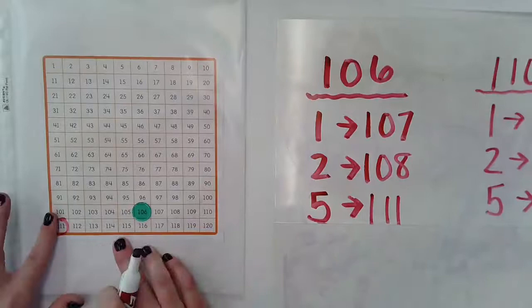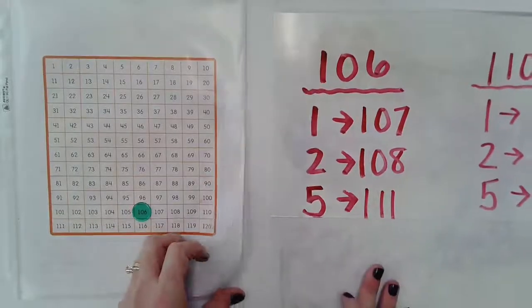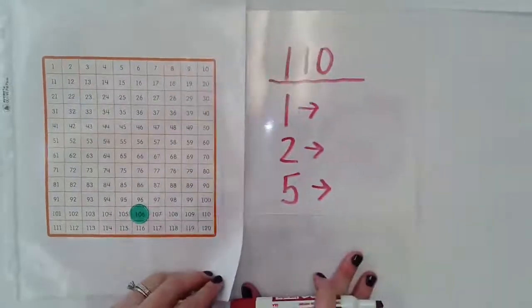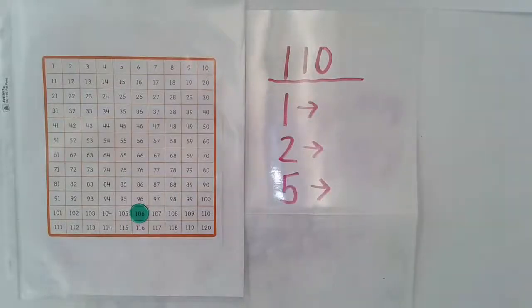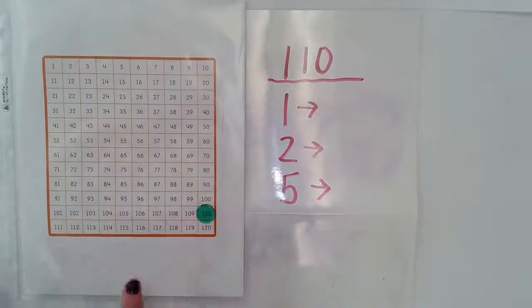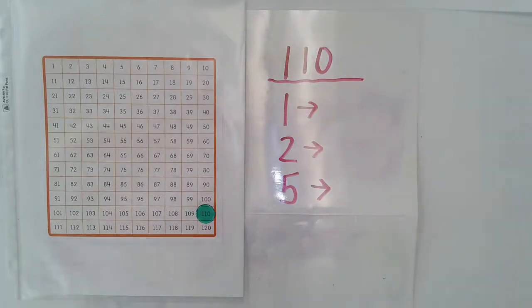All right, so let's kind of shift gears just a little bit to a whole other number here. This time I'm working with 110. So I'm going to start by finding 110 on my chart, and I notice it's all the way over to the right. So when I'm counting up, I'm probably going to have to go to the next row.